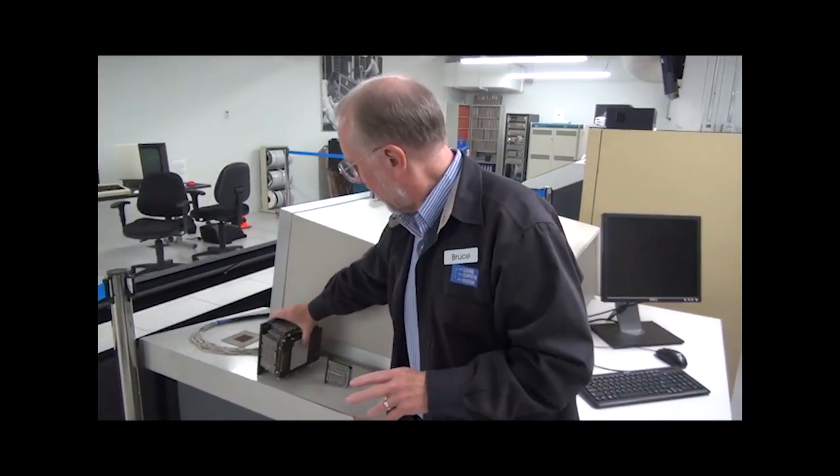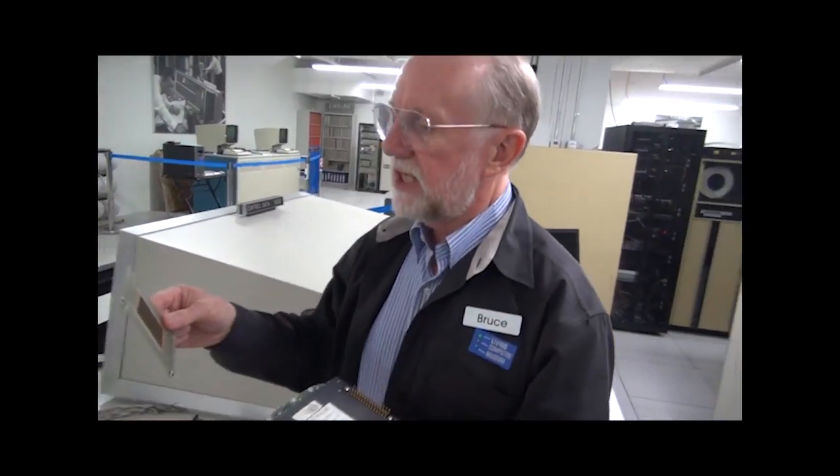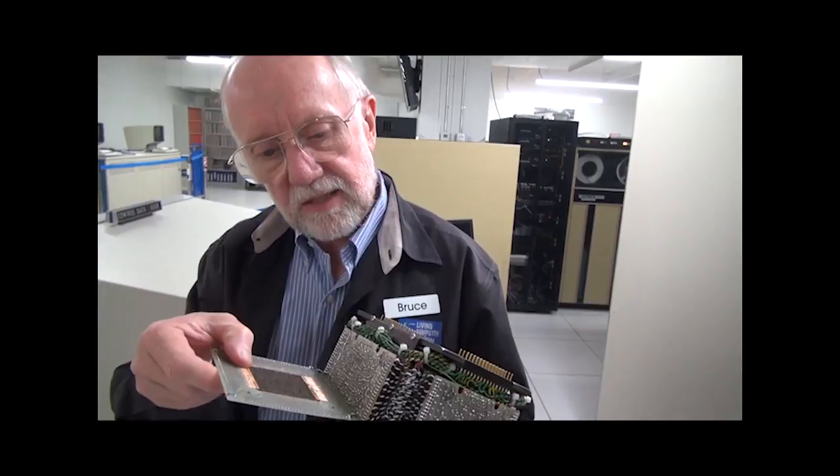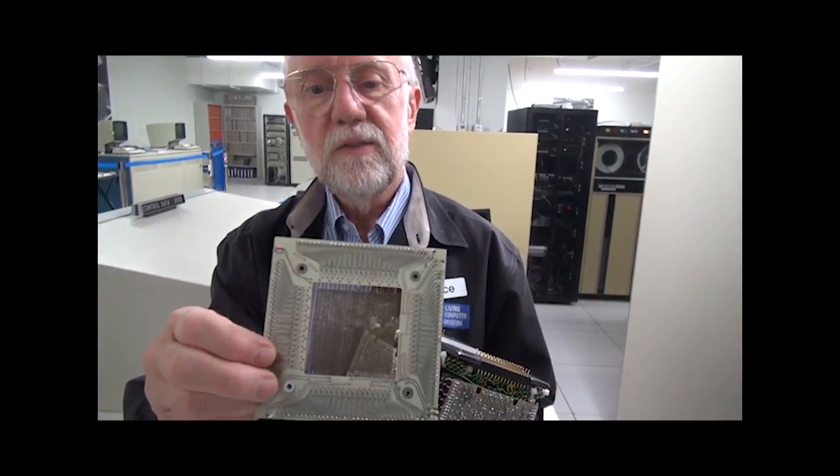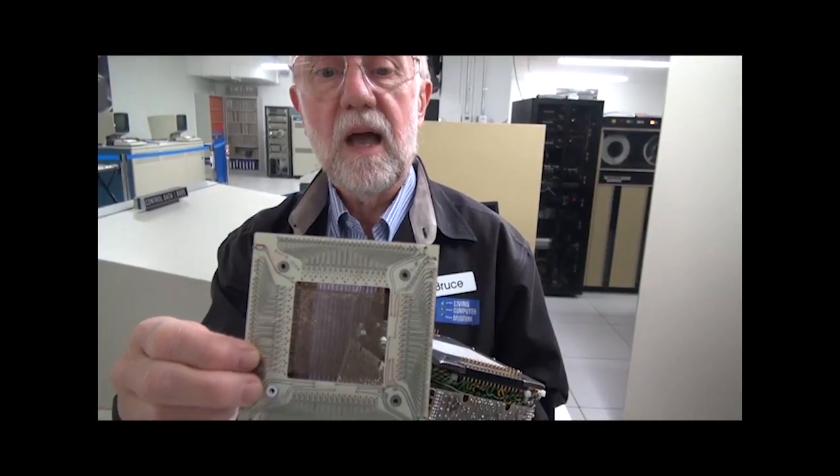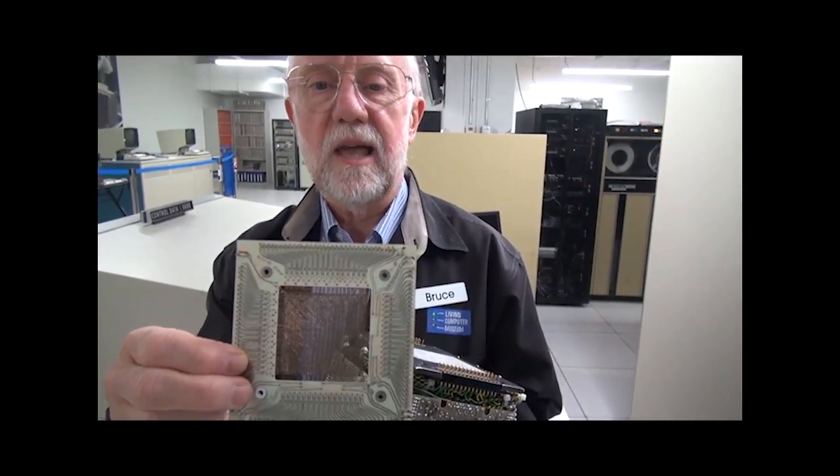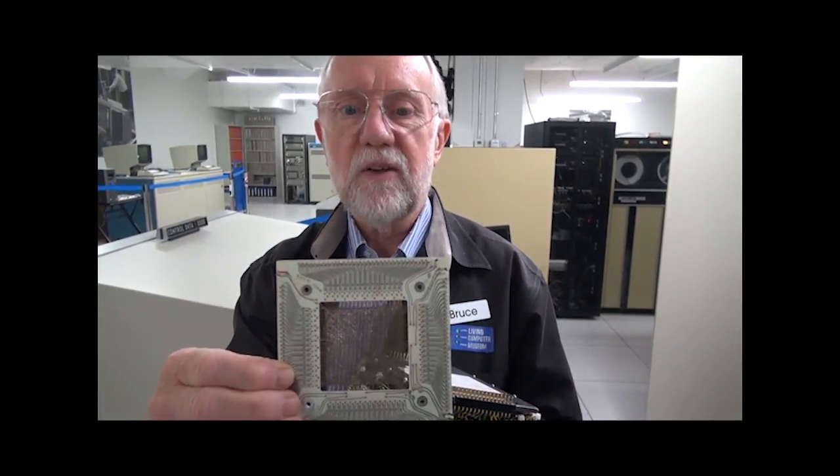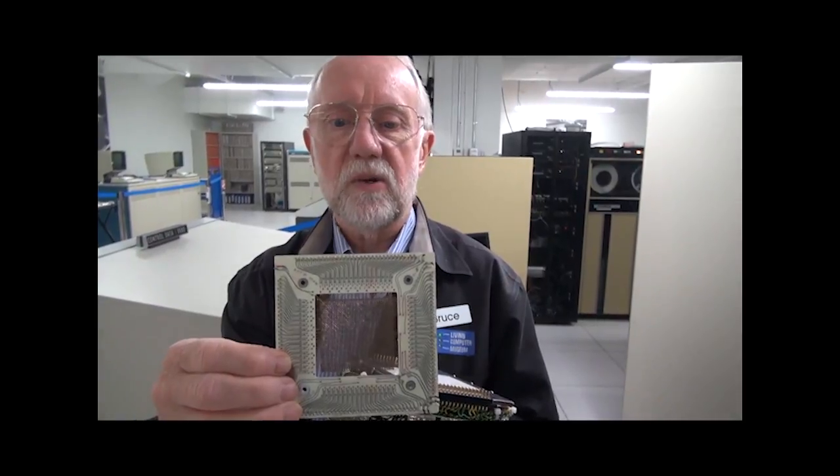So here's one of the core modules. There's 12 of these core mats inside here, stacked in like this. Here's the core mat. There's 4,096 bits there. And each thing that looks like it might be a circle was actually four cores on edge, and each core has five wires going through it. And they're all supported by the wires that go through there.